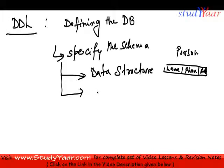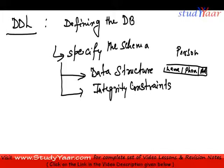The next concept is that DDL helps me specify integrity constraints. We've already talked about what these are, so I won't take it up further. Just like an integrity constraint on phone numbers — all phone numbers should be 10-digit numbers. That's an integrity constraint.